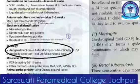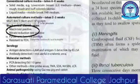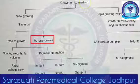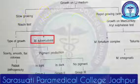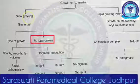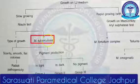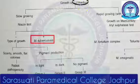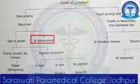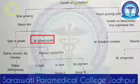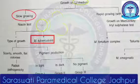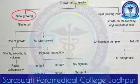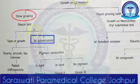For biochemical identification, you have to draw one table. After growth on the LJ solid media, you check whether it is slow-growing or rapid-growing. If it is slow-growing, you do a niacin test. If the niacin test is positive, you declare it as Mycobacterium tuberculosis. This is where the niacin test helps you.